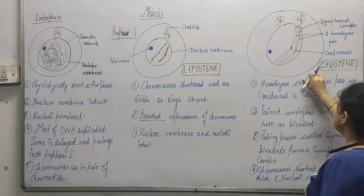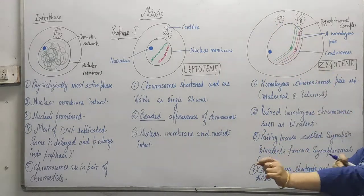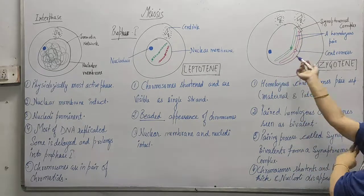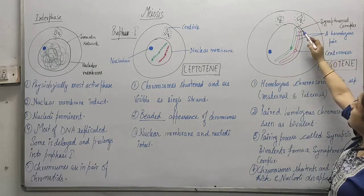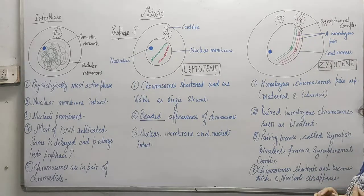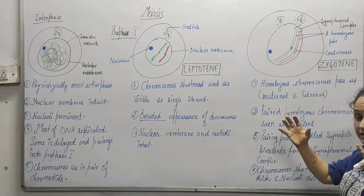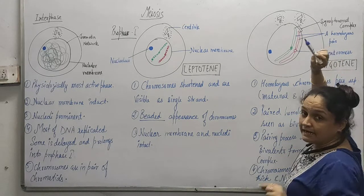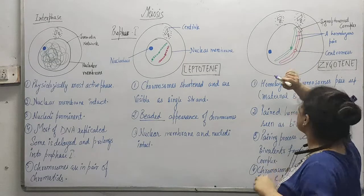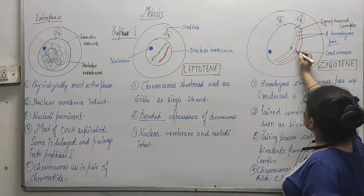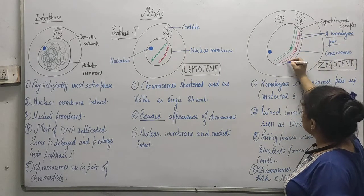The next phase we are going to enter is known as Zygotene. In Zygotene, two centrioles are available and here the chromosomes become homologous. Homologous means one from the maternal and one from the paternal. They come together and make a bivalent — bivalent means a pair, a homologous pair. The centromere and chromosomes are now aligned.